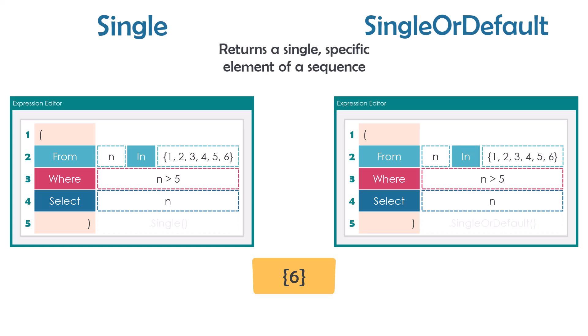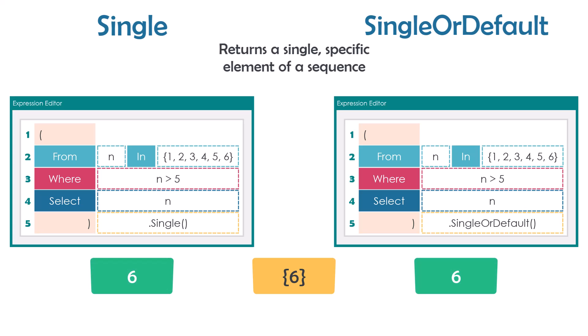Let's use both operators. I can use them by writing the operator with empty brackets. The result of both queries is the same number — the only number in the sequence from the query output. Until this point there is no difference between both operators, so we can use them in the same way with the same result. This is the first way to use these operators.